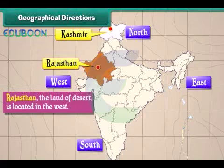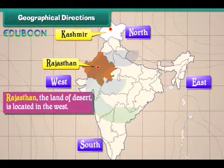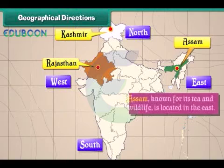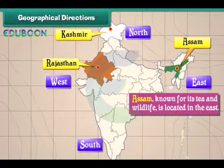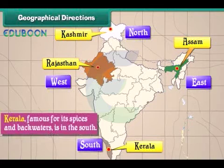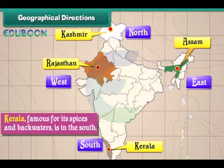Rajasthan, the land of desert, is located in the west. Assam, known for its tea and wildlife, is located in the east. Kerala, famous for its spices and backwaters, is in the south.